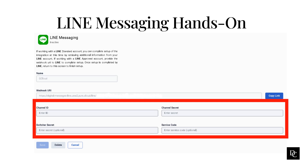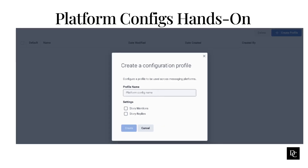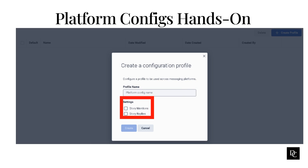Let's begin to get into this more by looking at the Platform Configs. Platform Configs allows you to use default settings across all messaging platforms if available. Creating one is straightforward. Under Message, click Platform Configs, then click Create Profile. Under Profile Name, enter a name. Under Settings, select Story Mentions, Story Replies, or both. Click Create. This will now allow you to add this profile to the platforms you have created, if applicable.